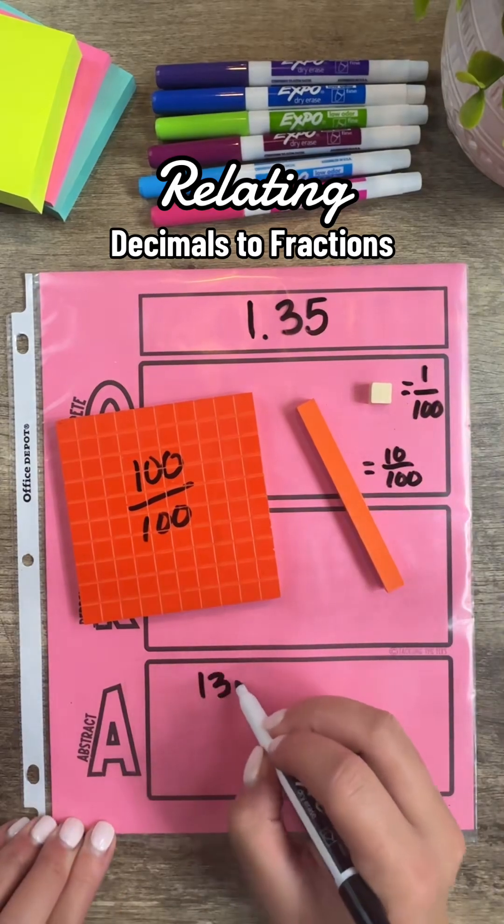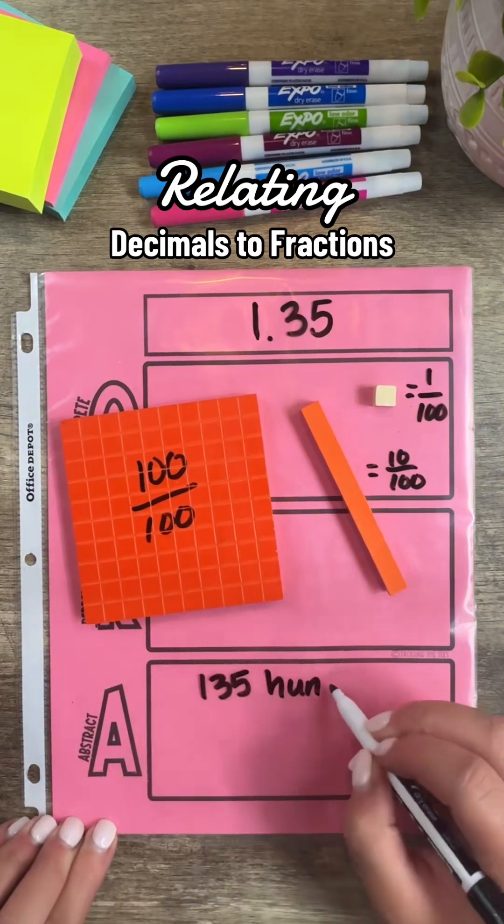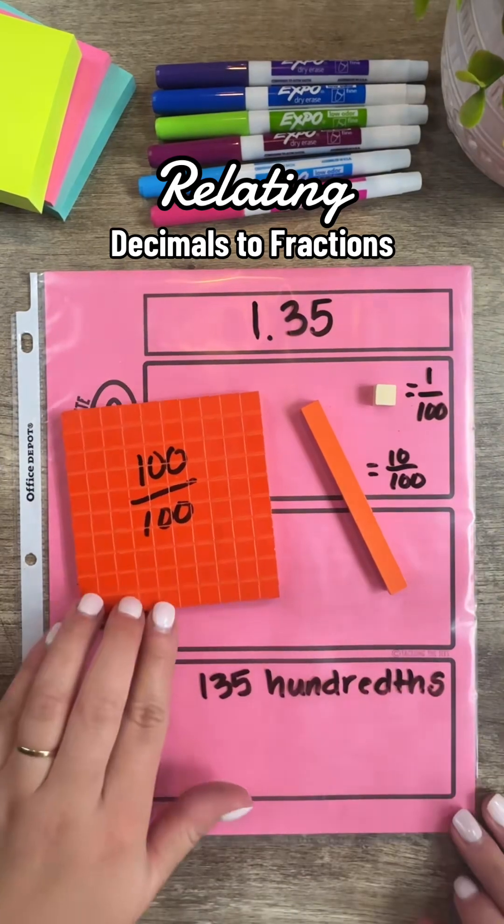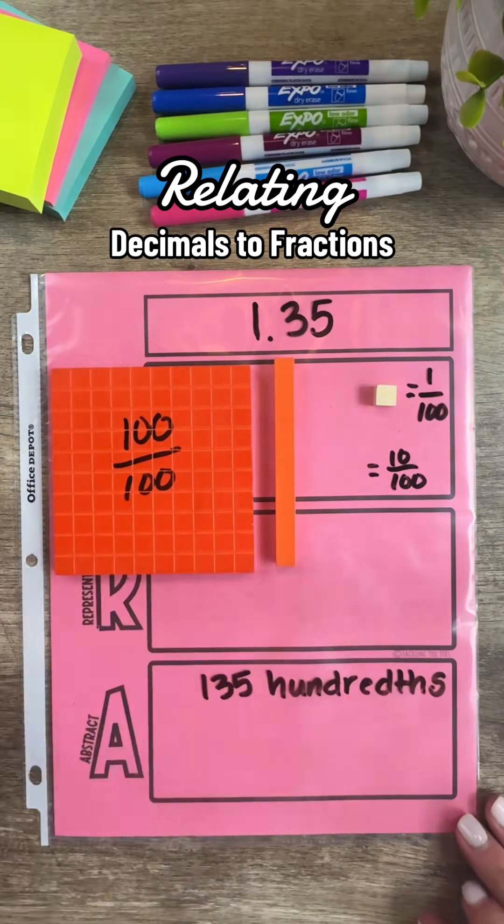Now that I've assigned values to my base 10 blocks, let's go ahead and represent 135 hundredths. This model will help students visualize decimals as fractions.